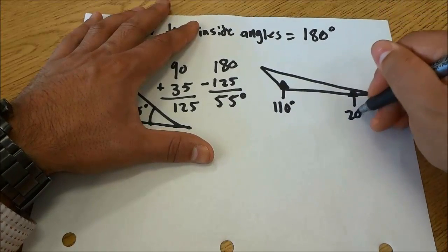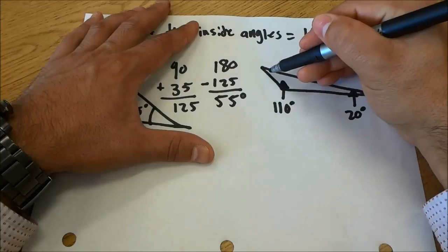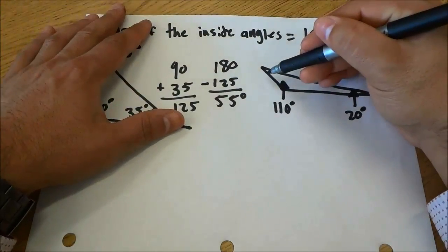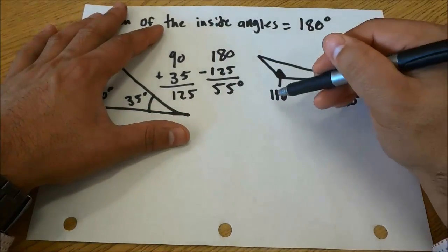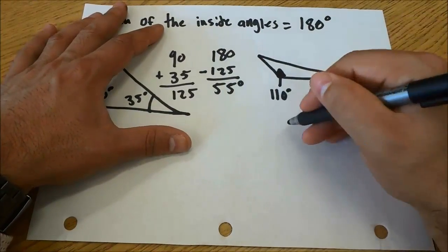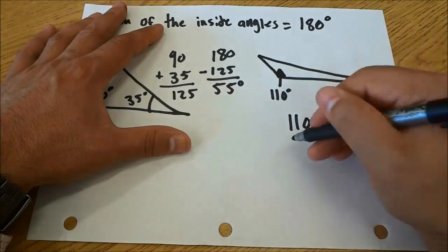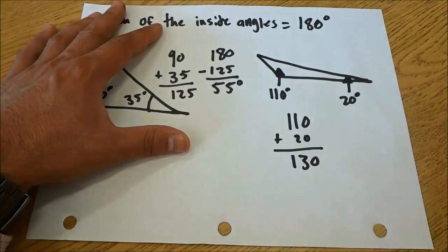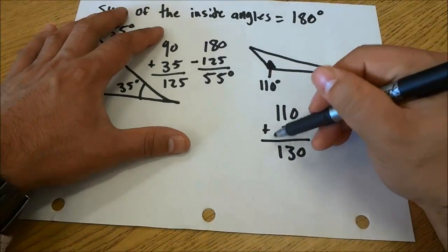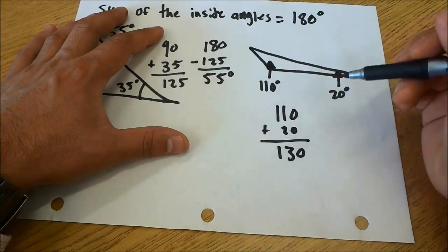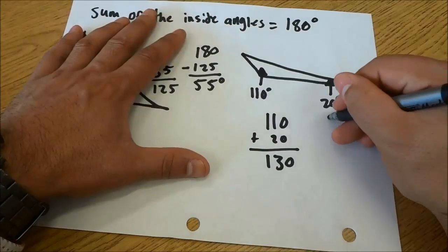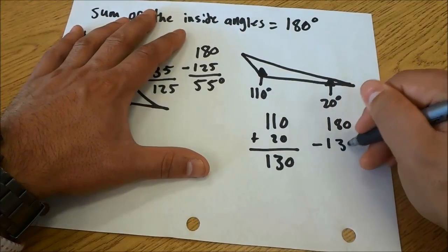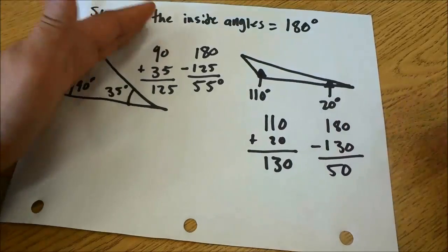This angle is 20 degrees and we don't know what this angle is so we are going to find the missing angle. Once again I'm going to add together the two angles that we know, which is 110 and 20, and that gives us 130 degrees. We just have to take this sum and subtract it from 180. So 180 degrees subtract 130 gives us 50 degrees.